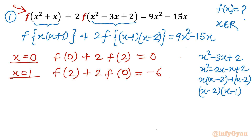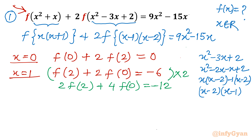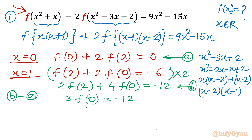Now you can see there are two equations and two unknowns: f(0) and f(2). If I multiply the second equation by 2, I get twice of f(2) plus 4 times f(0) equal to minus 12. Now I will cancel twice of f(2) from equation (a). If I perform b minus a, then I get 3f(0) equals minus 12, so f(0) equals minus 4. Once f(0) is minus 4, putting back into equation (a) gives f(2) equals 2.